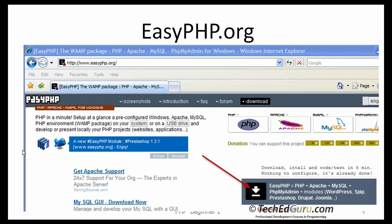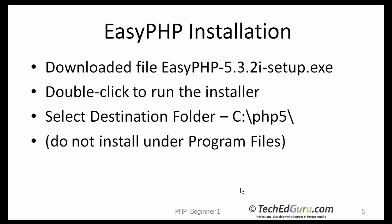Now let's talk about the software you would need. Go to ezphp.org and right on the front page you will see a link for downloading EasyPHP. Just download the software and put it on your computer. The installation is pretty straightforward. You will be downloading a file something like ezphp-5.3.2i-setup.